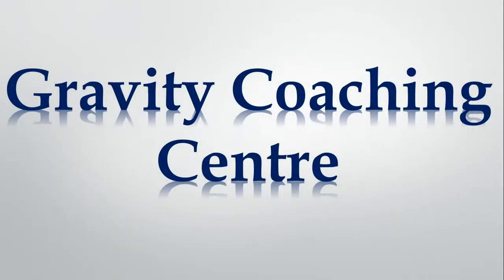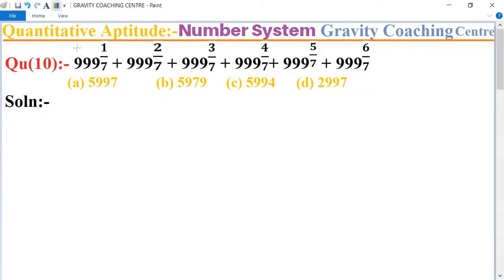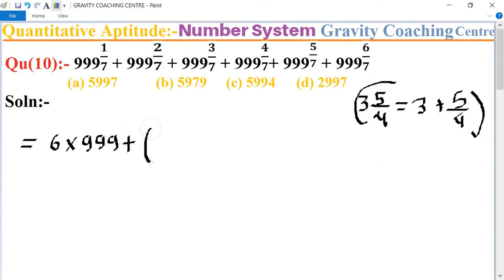Welcome to our channel Gravity Coaching Centre, Quantitative Aptitude chapter Number System, question number 10. So add this. Triple line here, triple line is six times, so we multiply six into triple nine plus add all the fraction part.